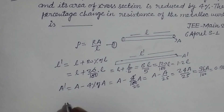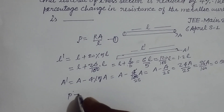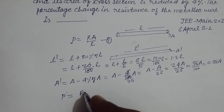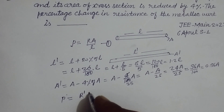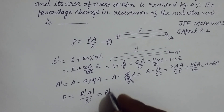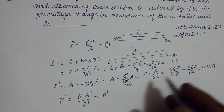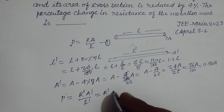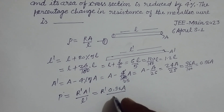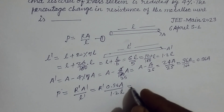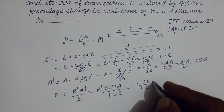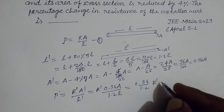Now, the specific resistance remains the same when the condition changes. So using Rho = R'A' upon L', we get R' equals Rho times L' upon A'. Substituting, R' times A' equals Rho times L', where A' is 0.96A and L' is 1.2L.